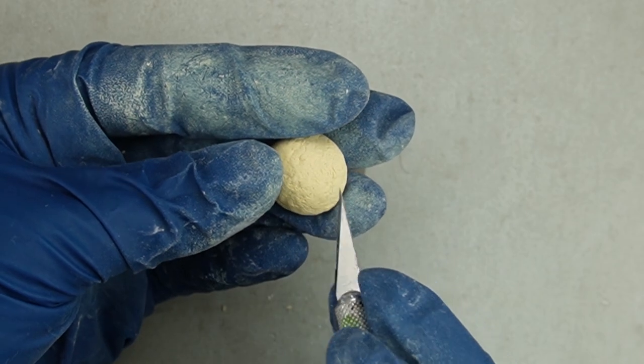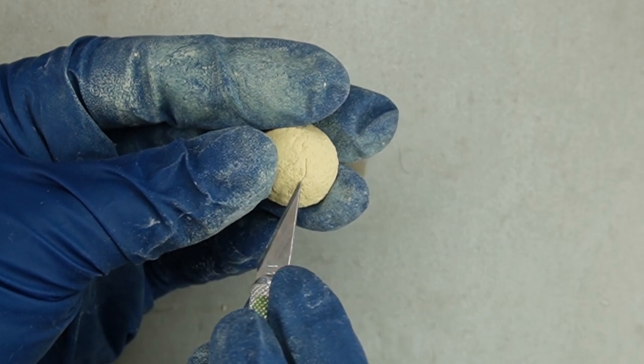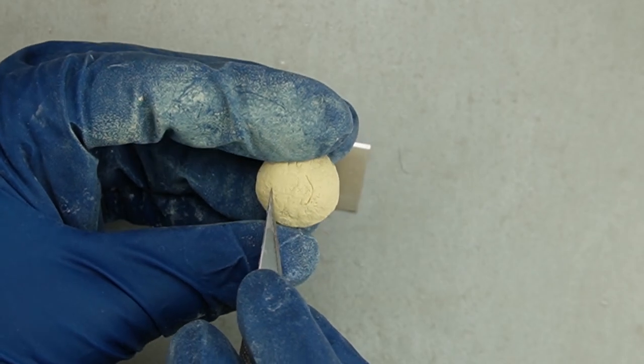I'm using my exacto knife to cut little lines around the bread to make it look like the dough stretched and cracked as it baked.